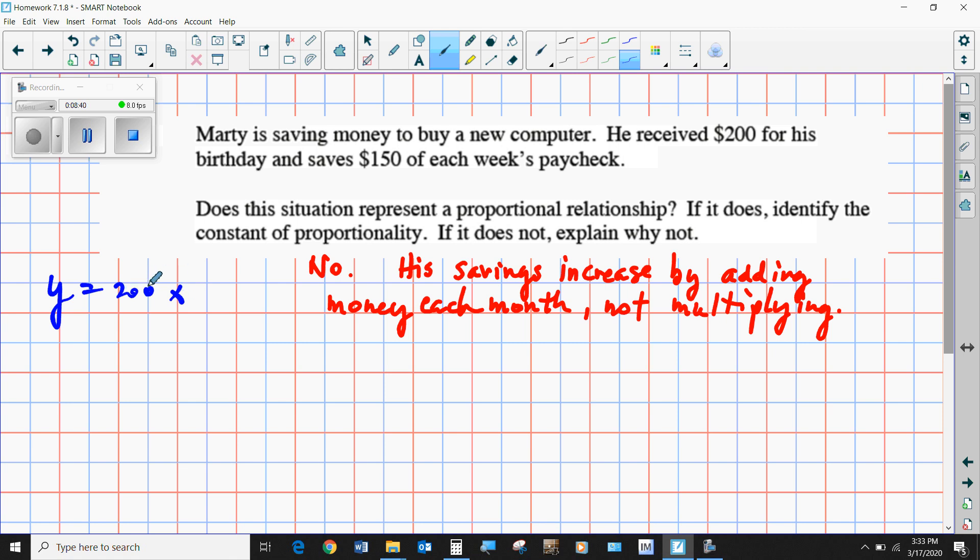But actually, I think I got this a little bit wrong. I think it was $150 per week that he was saving. So that would be proportional, but the fact that he started off with $200 means that after one week he's actually going to have $350, and after two weeks he's going to have $500. And if he spends no time saving money from his paycheck, it would still be $200 that he would have from this birthday present. So zero-zero does not apply to this situation. It is not proportional.